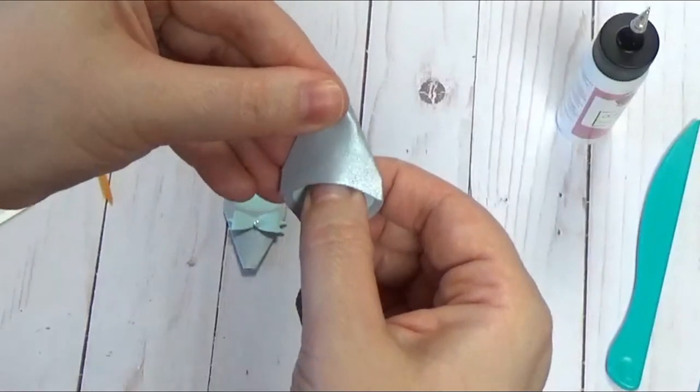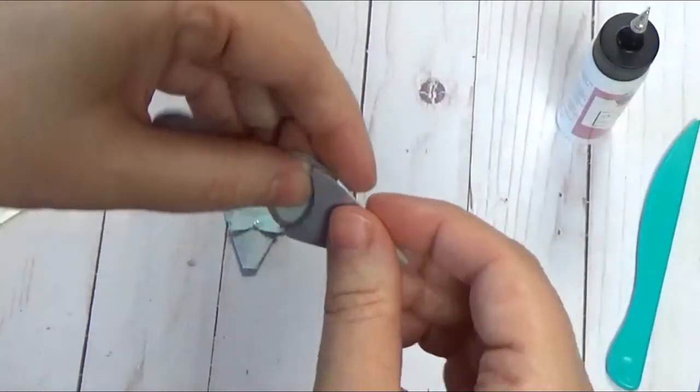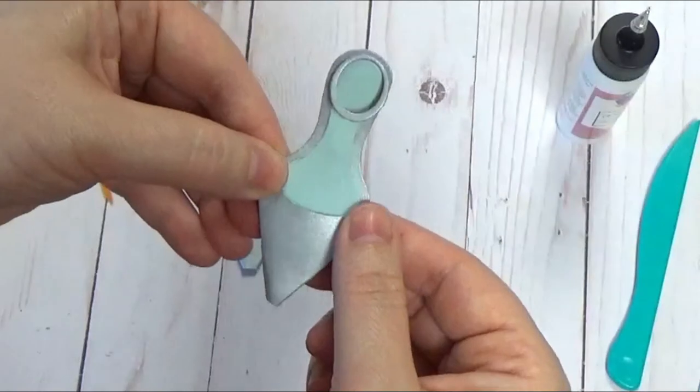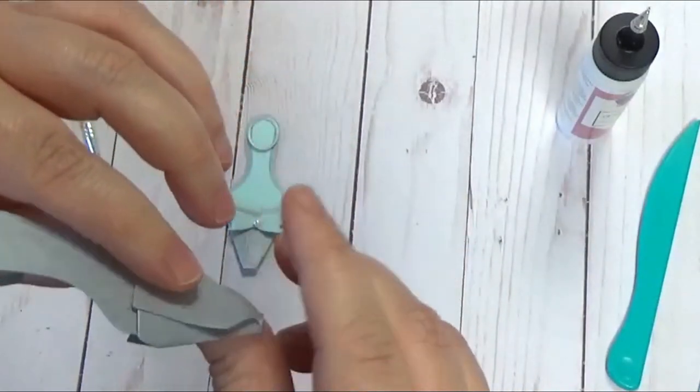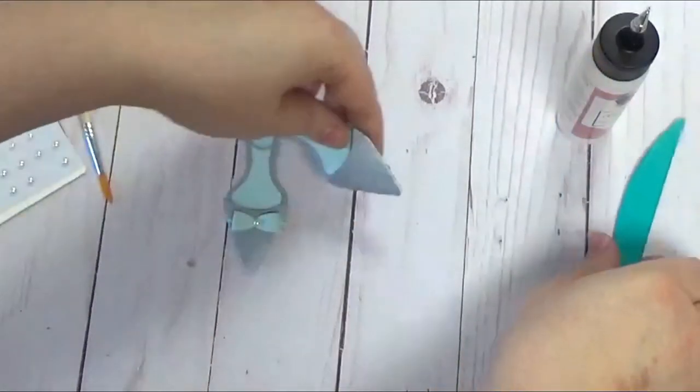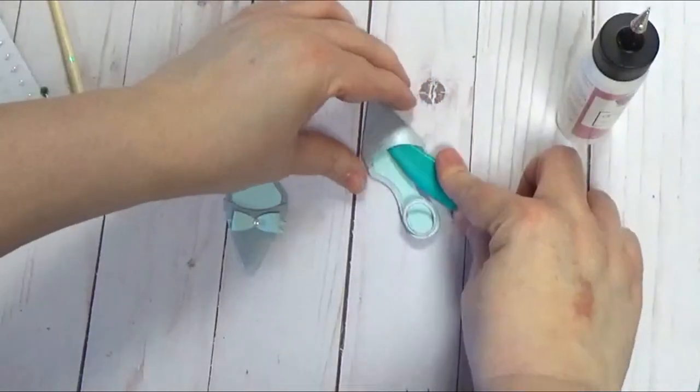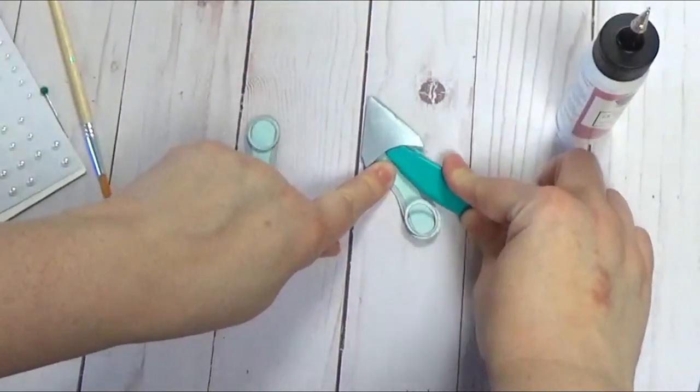We still want this to be open so it looks like a shoe has dimension. I mean, you could glue it down flat if you wanted to, but it won't quite have as much dimension as maybe is intended. You can always stick your bone folder in there if you need extra help smoothing that down.